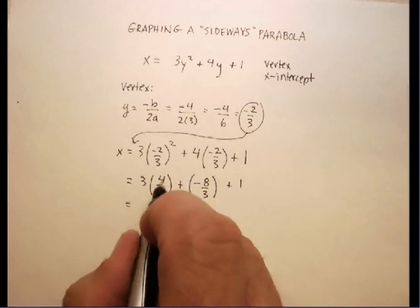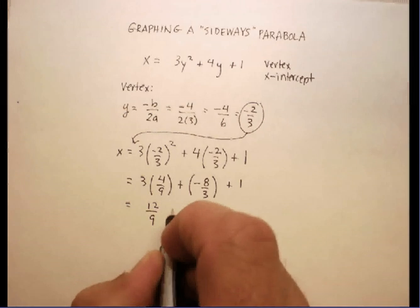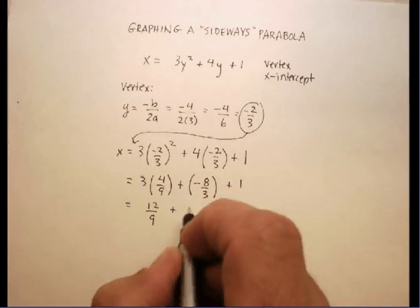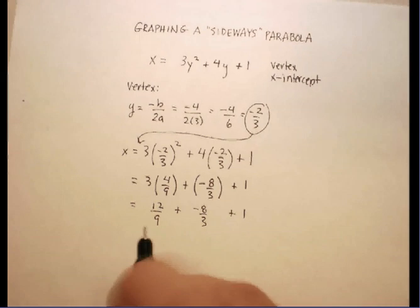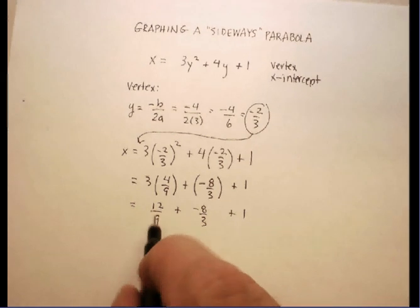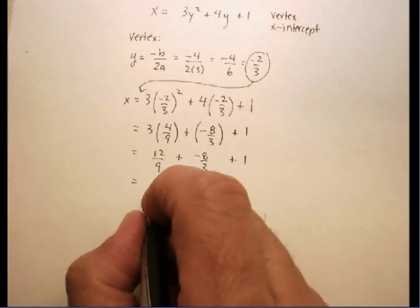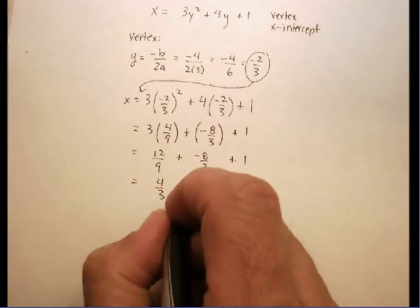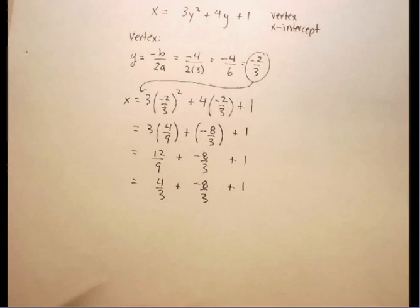Continuing on, 3 times 4 ninths is 12 ninths, plus a negative 8 thirds, plus a 1. Notice that I can reduce this. I can reduce it to 4 thirds. So let me go ahead and do that and bring the rest of it down.